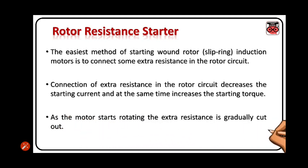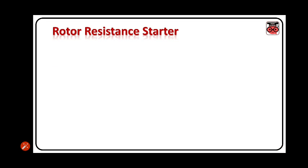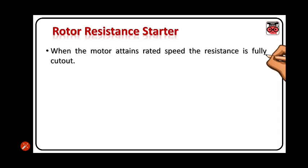As the motor starts rotating, the extra resistance is gradually cut off. When the motor attains rated speed, the resistance is fully cut out.